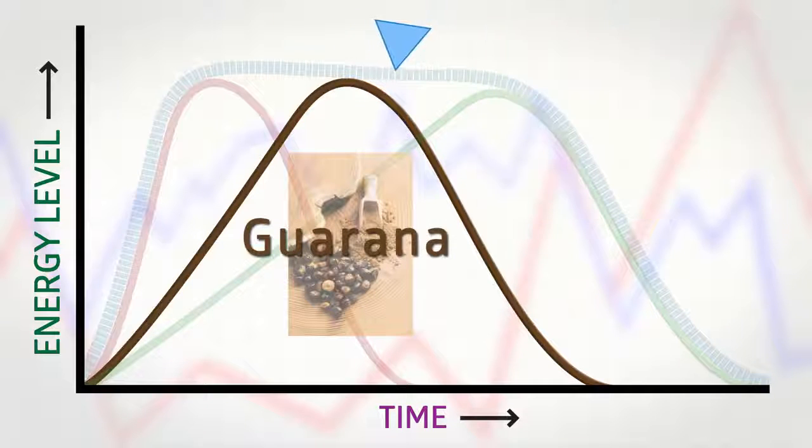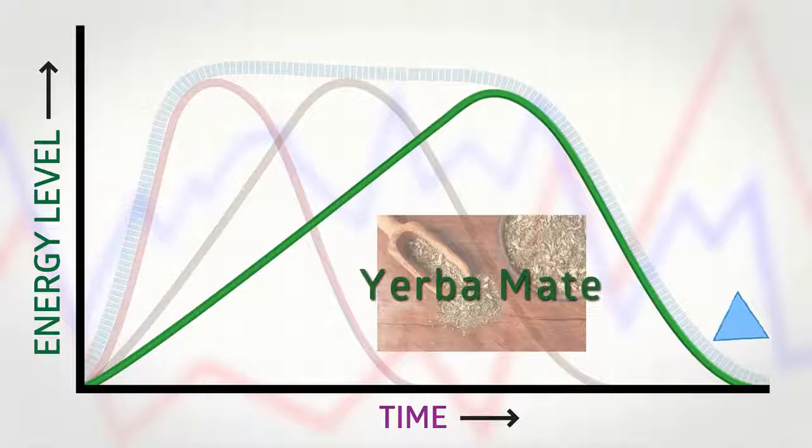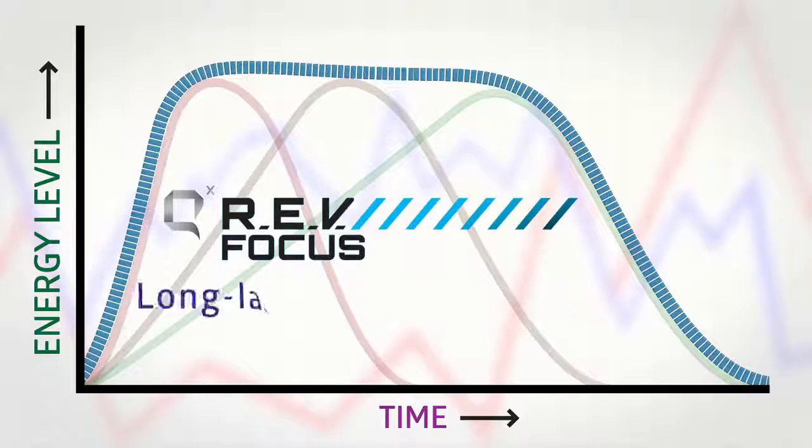And right on cue, a third slow-release ingredient carries on to extend the energy curve even longer. This time it's yerba mate, also from the jungles of South America. With this three-part sequence, these fuels deliver long-lasting mental energy.